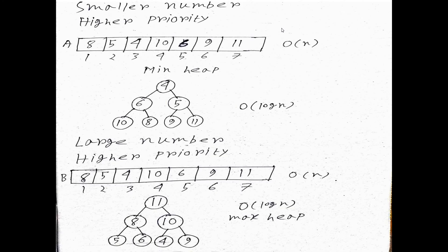Now, which heap do we use — min heap or max heap? The rule is: if smaller number has the higher priority, we use the min heap. If larger number has the higher priority, we use the max heap.